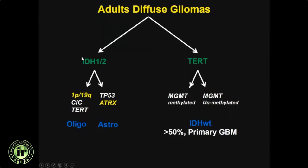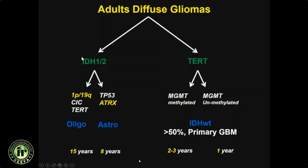Another molecular marker is MGMT. If IDH wild-type tumors have MGMT methylation, they do a little better than those without MGMT methylation. More than 50% of primary GBMs are IDH wild-type tumors. The reason it's important to segregate tumors based on genomic markers is that survival differs significantly: oligodendrogliomas survive almost 15 years, median survival for astrocytomas is 7 years, whereas IDH wild-type glioma survival is much less. MGMT-methylated IDH wild-type gliomas do slightly better than unmethylated ones.